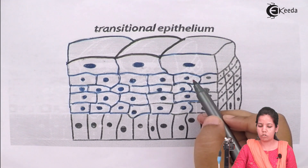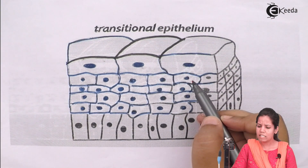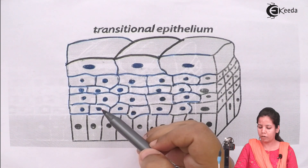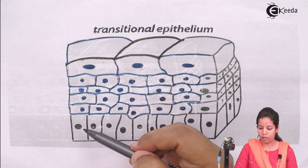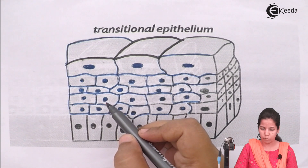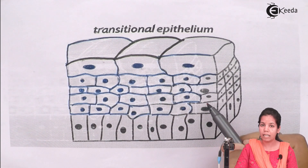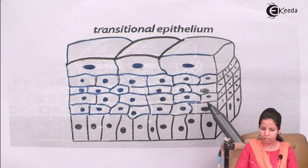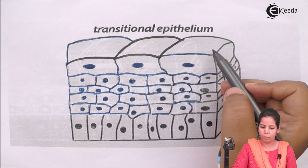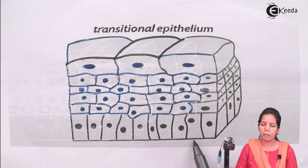This is the structure of Transitional Epithelium. As you can see, it consists of a number of types of cells — some are oblong and elongated, while some are glandular and spaced out. There is also a stratum layer present in this kind of cell. The top layer is the surface layer and the lower layer is the basement layer.